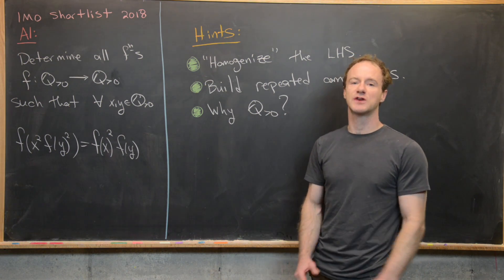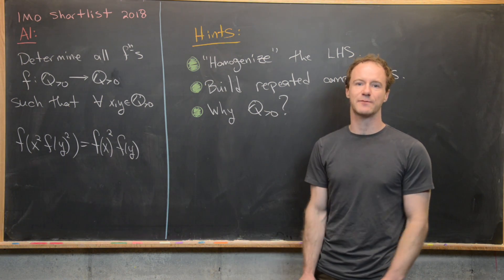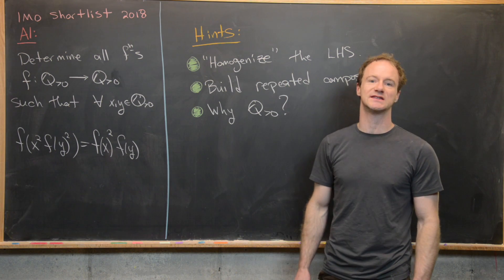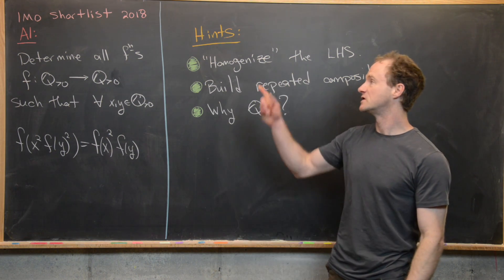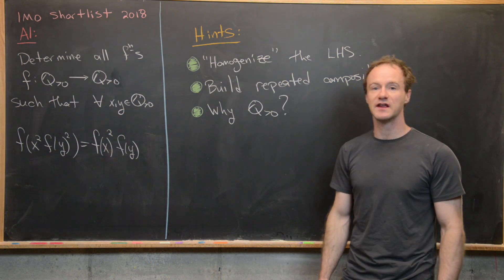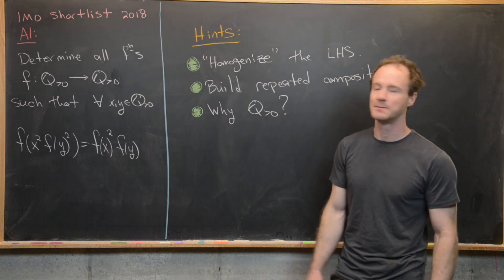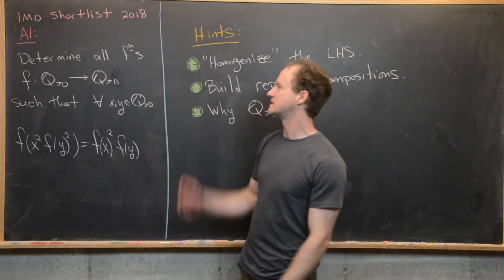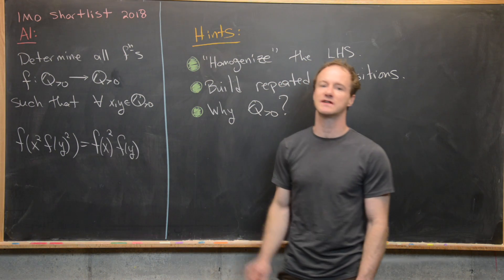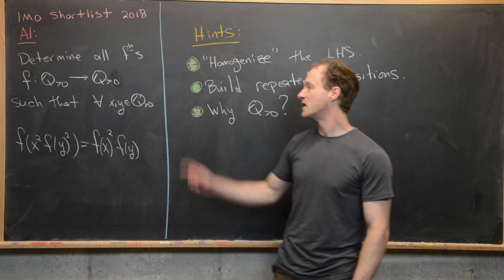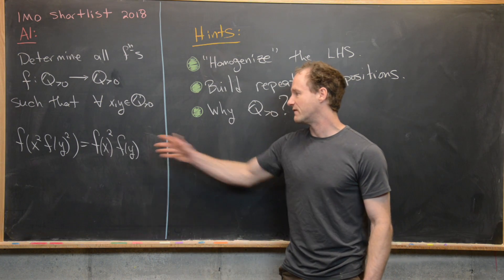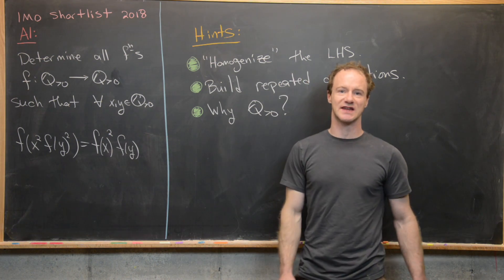I've been trying to get better at solving contest-type problems involving functional equations and I came across this nice one. It's from the International Math Olympiad shortlist — the year was 2018 — and the goal is to determine all functions from the positive rational numbers to the positive rational numbers such that for all x and y this equation is satisfied.